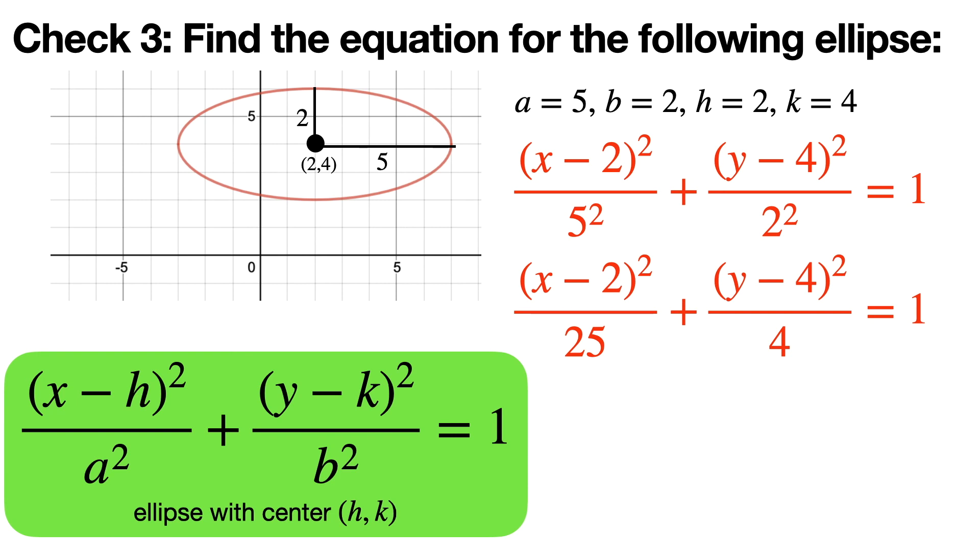This is one way of looking at an ellipse that we've learned today, which is it's simply just a stretched or compressed circle. There are other ways of looking at ellipses in terms of focal points and in terms of focus directrix that we're going to discuss next time. But I think this is the most intuitive way of thinking of it, so that's why we did this one first. Until then, have a great day.